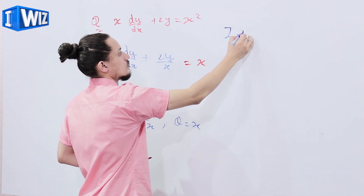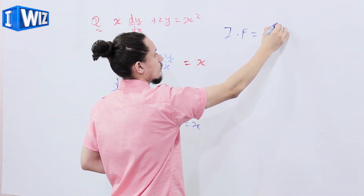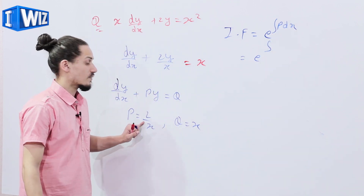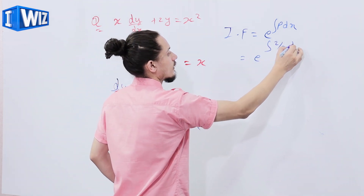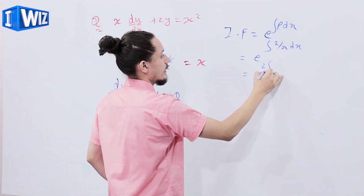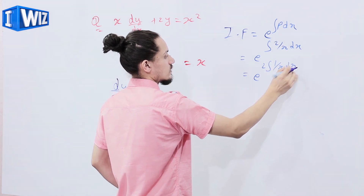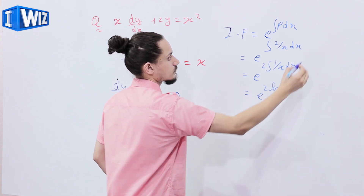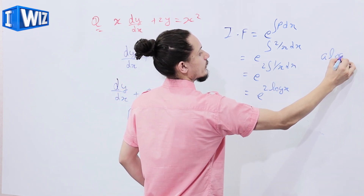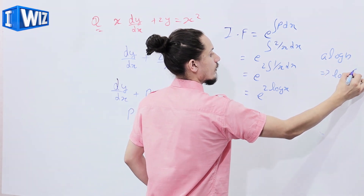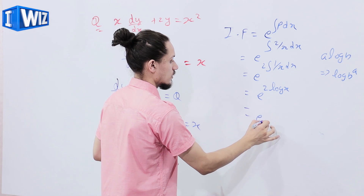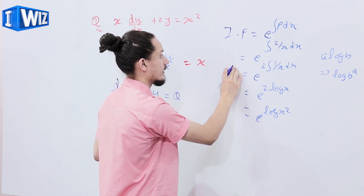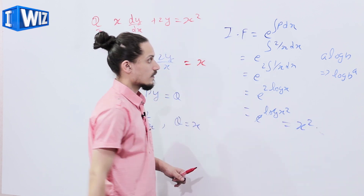Second step: finding the integrating factor. IF = e^(∫(2/x)dx) = e^(2·log(x)). Using the property a·log(b) = log(b^a), we get e^(log(x²)), and since e and log cancel, the integrating factor is x².